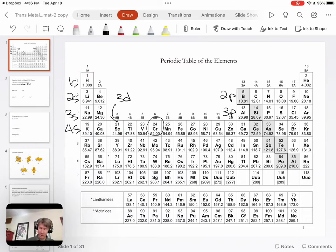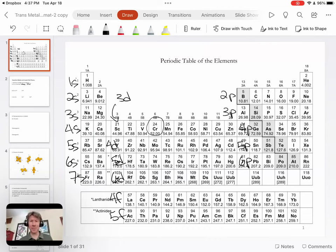We can keep going. We've got the 4Ps, the 5Ss, the 4Ds. The 5Ps start with indium element number 49, 6S. Then the asterisk tells you to drop down to the 4F region and come back up to the 5D, 6P, 7F, 5F, 6D. I should update my periodic table in the 7P region.